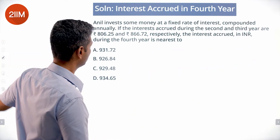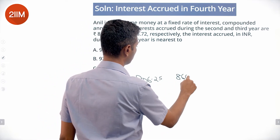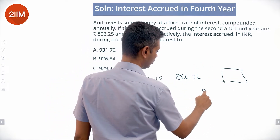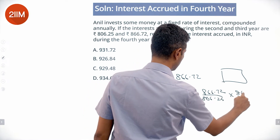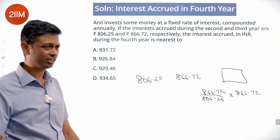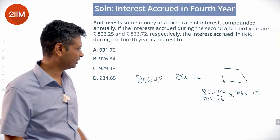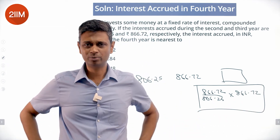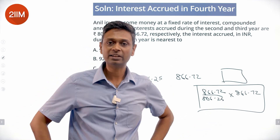We have 806.25 and 866.72. The common ratio is 866.72 divided by 806.25 — I think this is 1.075, so about 7.5% interest rate. The fourth year's interest is 866.72 multiplied by 1.075. The concept is simple: just plug in the ratio and calculate the answer.